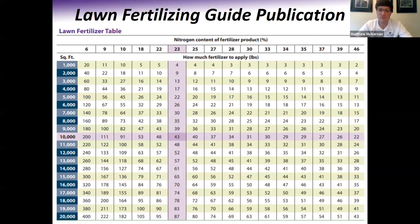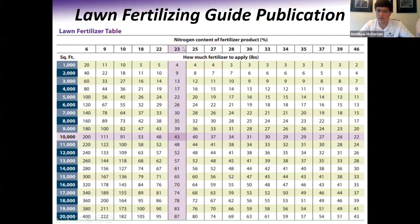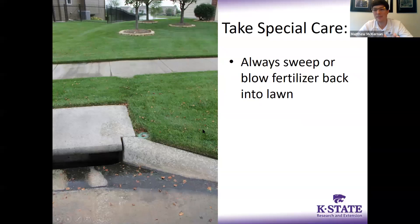On page two of the lawn fertilizing guide handout, which will be dropped in the chat and posted with the recording, there's a chart listing different percentages of nitrogen you might find on a bag — all the way up to 46% for urea fertilizers. You look at the percentage of nitrogen and the square footage of lawn you need to fertilize. For example, with a 23% nitrogen fertilizer and 10,000 square feet of lawn, the chart tells you you need to buy 43 pounds of fertilizer to get one pound of nitrogen per 1,000 square feet. Don't let the math intimidate you — there are great resources to help figure out exactly how much fertilizer to apply based on the type you're using.